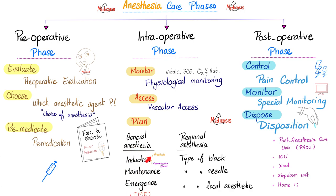You've got to maintain them during the surgery and make sure they wake up after the surgery. Postoperatively, you control pain, do special monitoring, then dispose — send the patient home if it's a minor surgery and everything is fine. If it's severe, send them to the ICU. Or if they need follow-up, send them to the post-anesthetic care unit, the PACU.